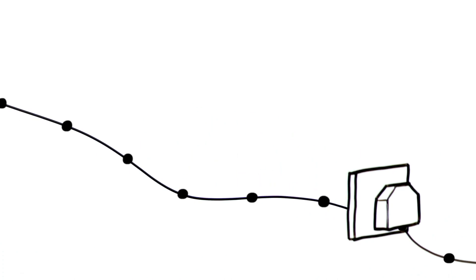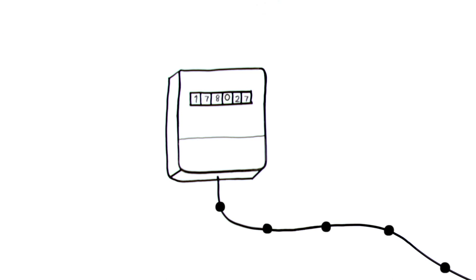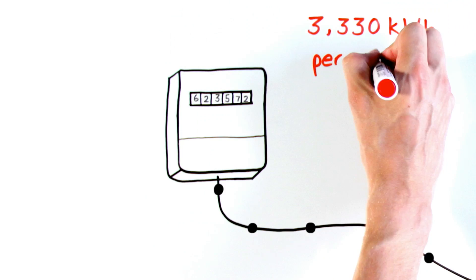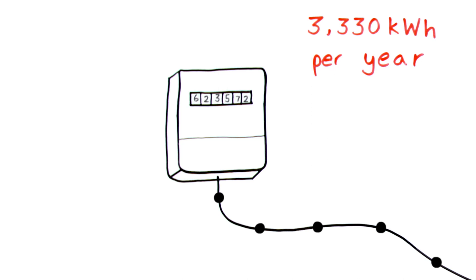So for every second that it's plugged in, your electricity bill will be creeping up. And it all adds up too, with the typical house using around 3,330 kilowatt hours per year, which costs about £480. Certainly not an insignificant amount.